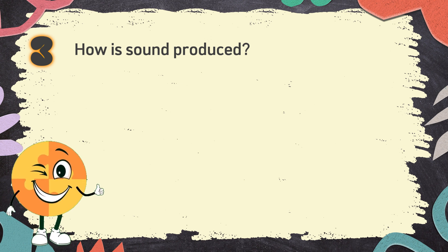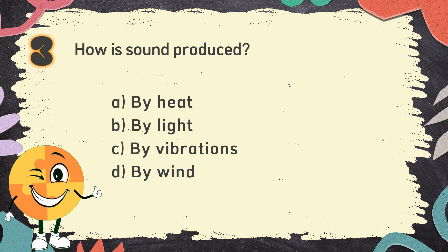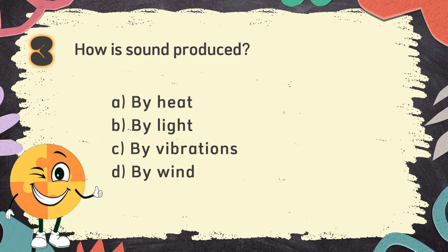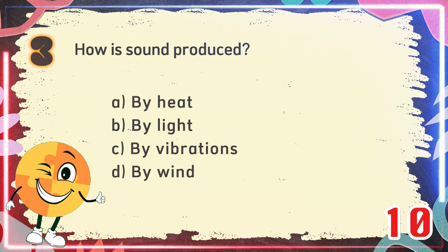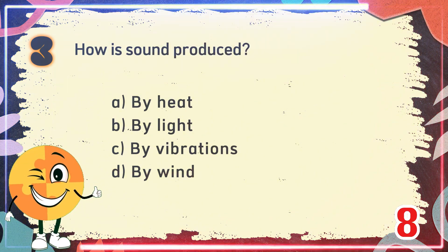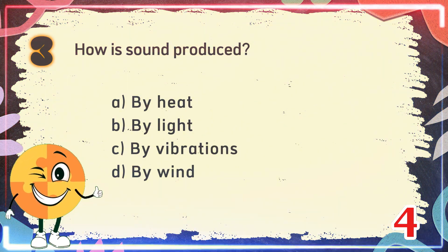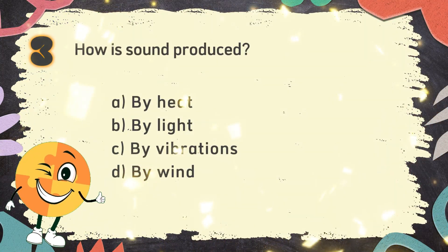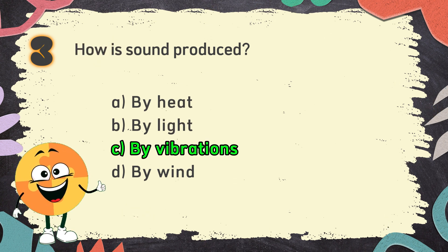Number 3. How is sound produced? The choices are: A. By heat, B. By light, C. By vibrations, D. By wind. The correct answer is C. By vibrations.